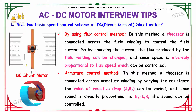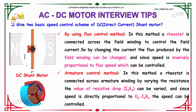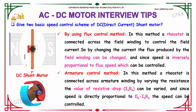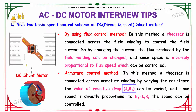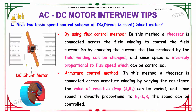The second basic speed control scheme is the armature control method. In this method, a rheostat is connected across the armature winding. By varying the resistance, the value of the resistive drop IA into RA can be varied, and since the speed is directly proportional to EB minus IA into RA, the speed can be controlled.